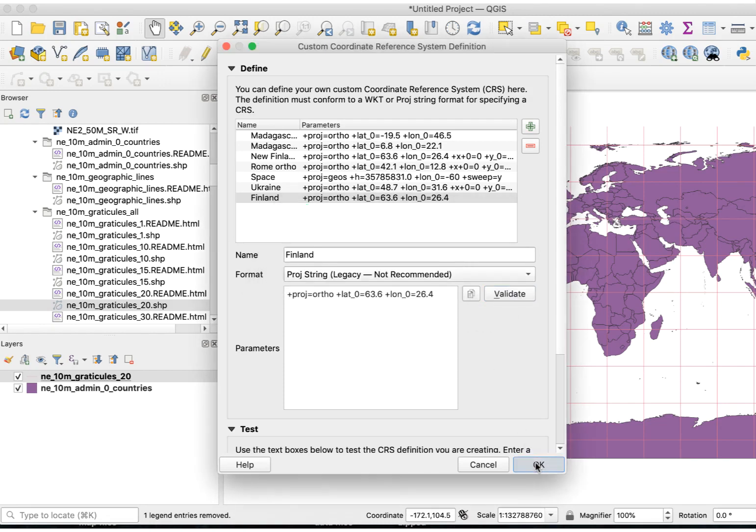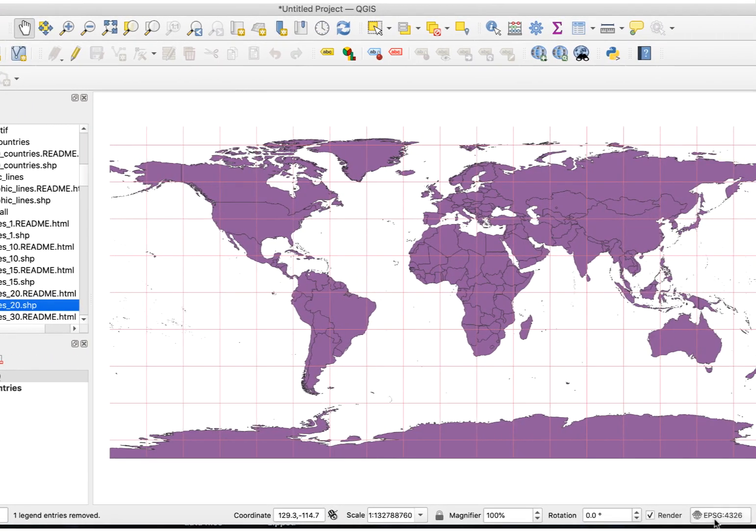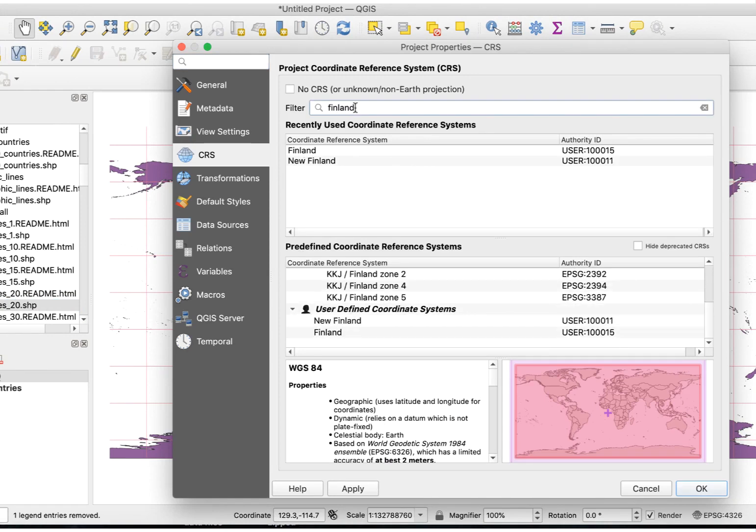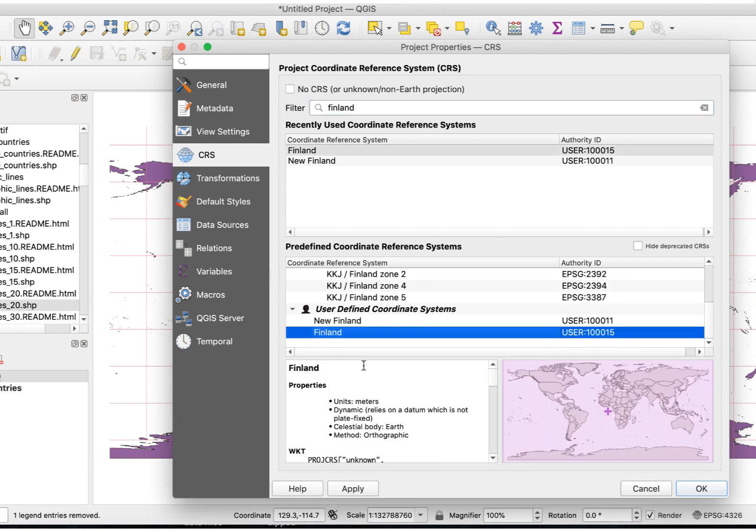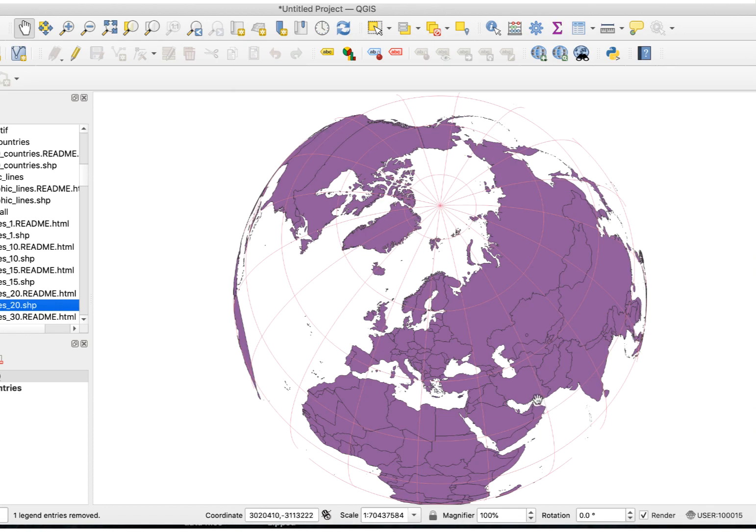This saves the projection in the QGIS projection library but doesn't apply it to the map. To do that, go to the CRS settings like you normally would and enter the new projection name in the search field. Select it and then click OK. I'll also change the color of the land areas and Graticules.